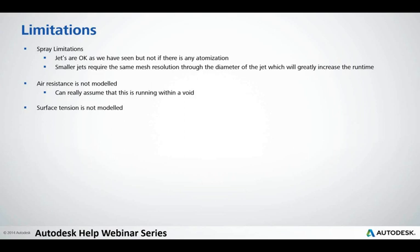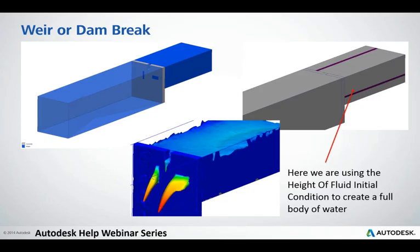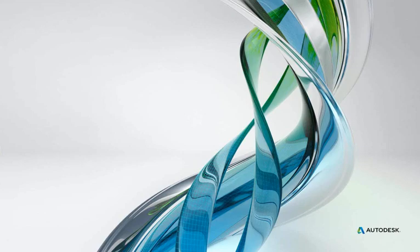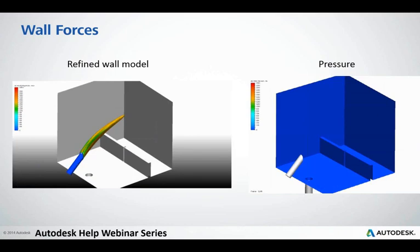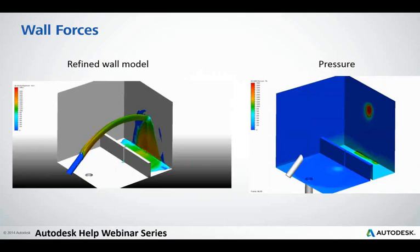Looking at a few applications — starting with a weir or dam breaker. On the right-hand side we have a height of fluid assigned: this is our full lake at the top of the dam. We've got a couple of holes that appear and the water pours through. Over time, unless we fill that volume at the top, it will empty out. A lot of the time in analysis of weirs or dam breakers we might look at forces — so we can look at the model with the jet progressing across, and on the right-hand side we can get the pressure on the wall and take the wall forces to measure what's happening to the solid surrounding structures.